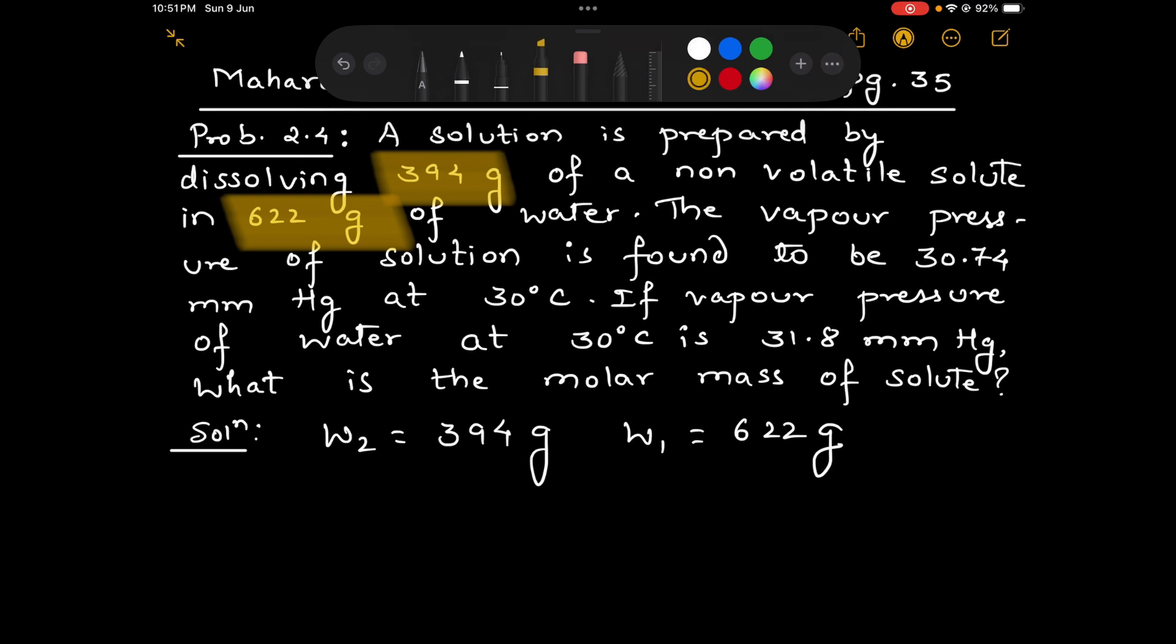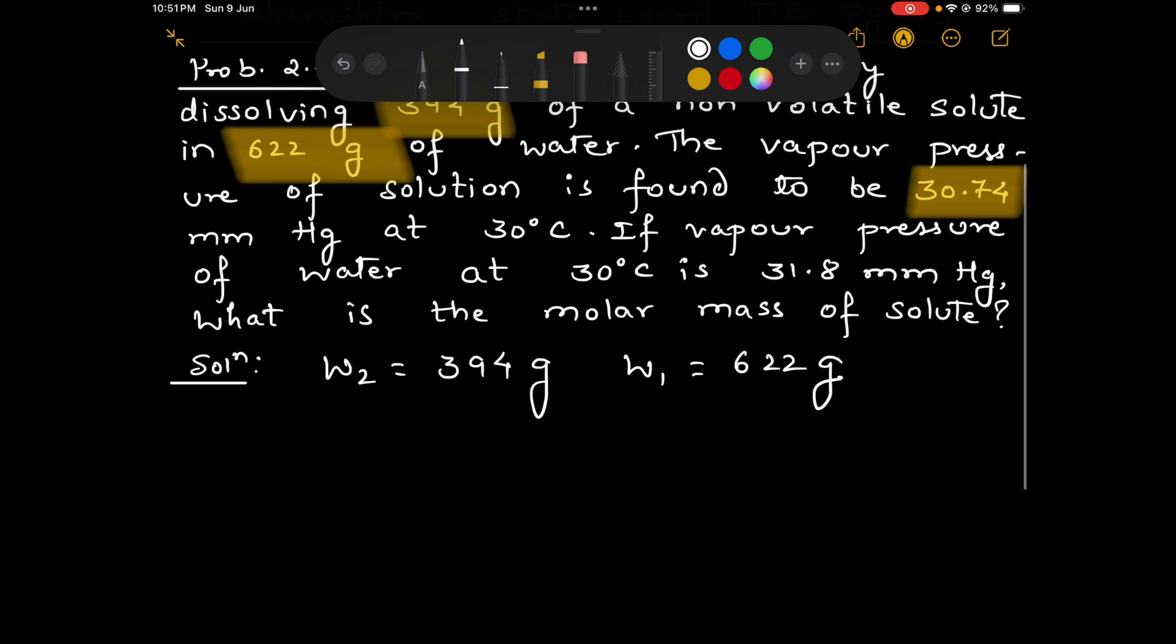The vapor pressure of the solution is found to be 30.74 mmHg at 30 degrees Celsius. That means P1 equals 30.74 mmHg.